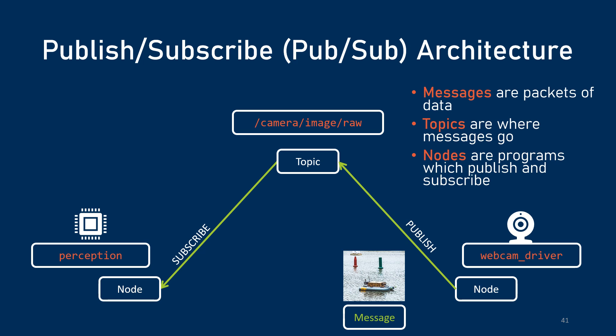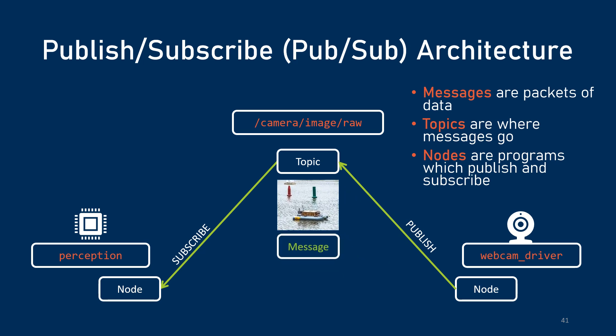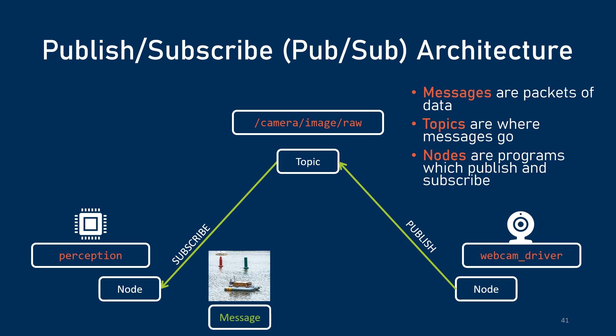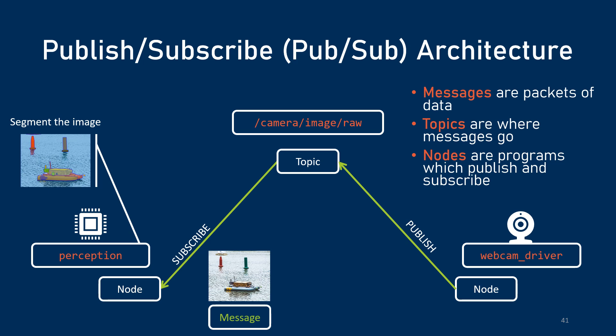Let's say you've got a webcam driver and it needs to share a camera stream with the perception software. It's going to create a message with the information of the image and publish it to what's called a topic. A node is an individual program — kind of like a user on YouTube — and a topic is like a YouTube channel. The node publishes data to the topic, and then the nodes subscribed to the topic get the data, and once they get it they do something with it — that is called a callback function.